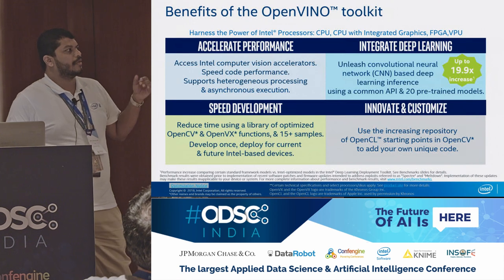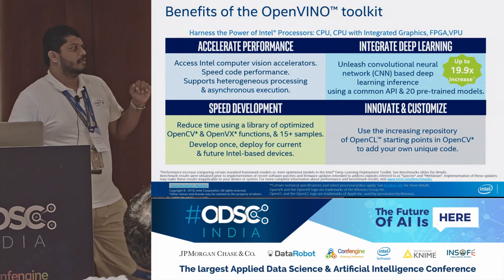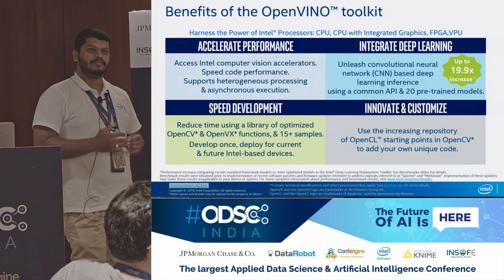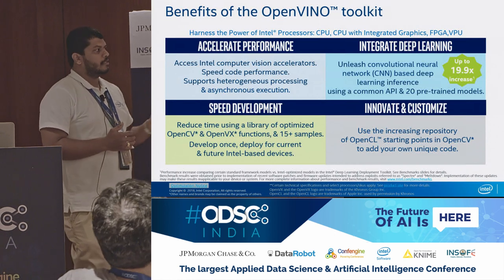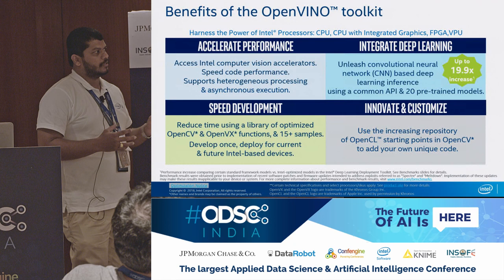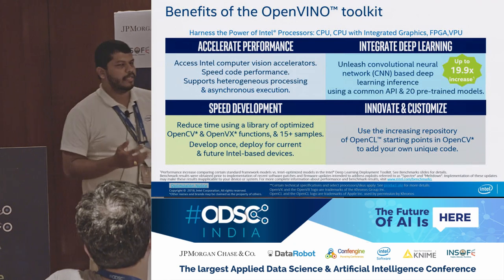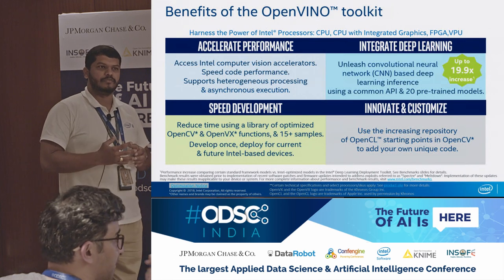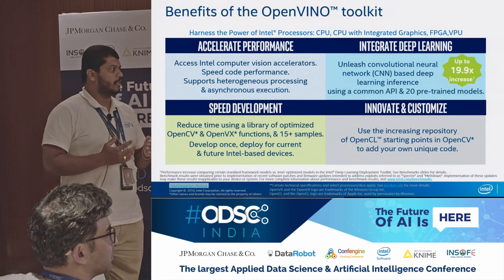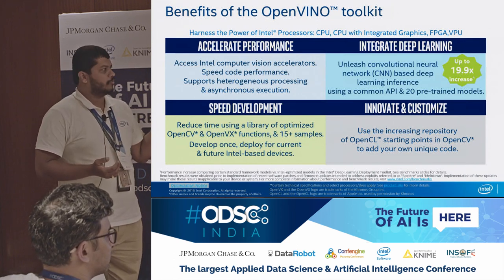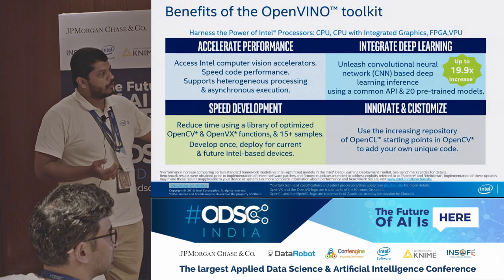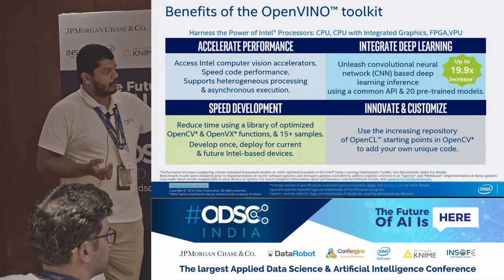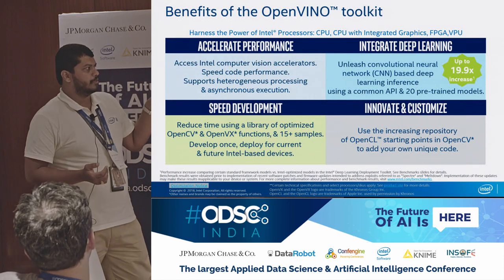These are some of the benefits you can get by using OpenVINO. At a very low level, it uses highly optimized Intel libraries like the Math Kernel Library. Every year Intel has new platforms coming up, and these libraries take advantage of the new architecture to help accelerate performance. You also have deep learning convolutional neural network-based solutions incorporated into this as well.